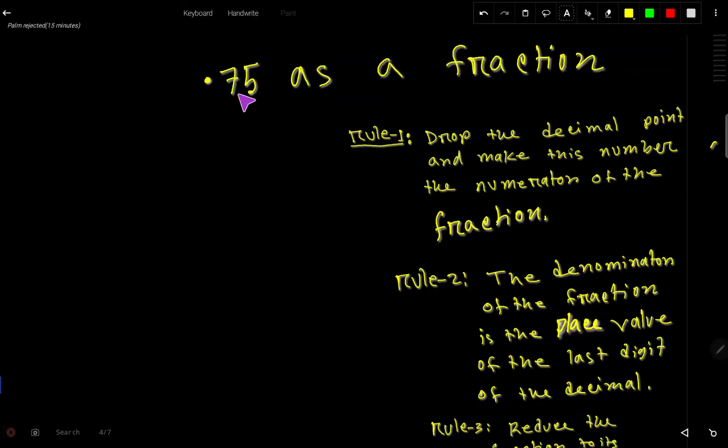0.75 as a fraction. To convert this decimal number 0.75 to a fraction, we have to select the numerator and denominator. A fraction will have numerator and denominator, so it is easy to determine.